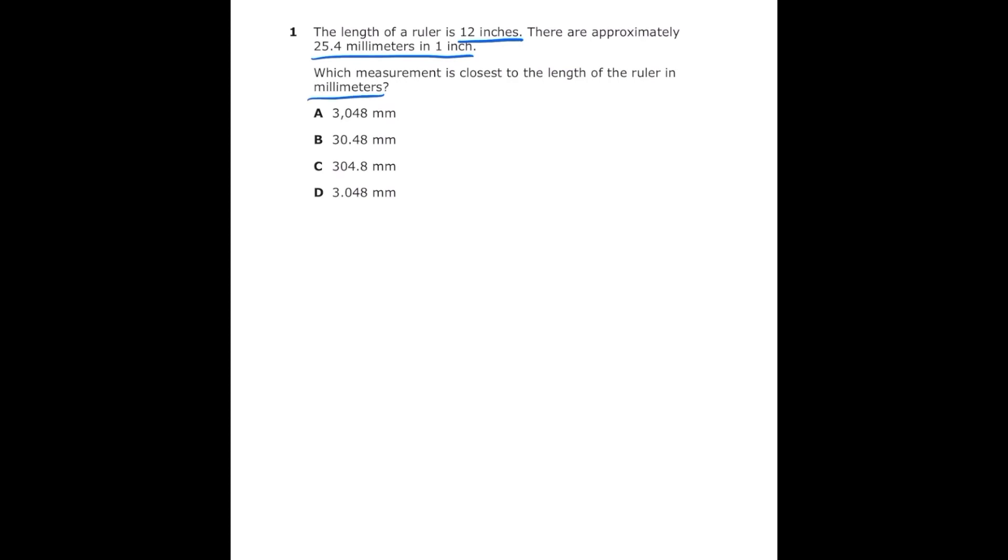I'm going to write out what I know. The length of the ruler is 12 inches and I'm multiplying by 25.4 millimeters per one inch, which cancels out the units for inches on top and bottom and just leaves me with millimeters. Then I do 12 times 25.4 and I should get 304.8 millimeters which is letter C.